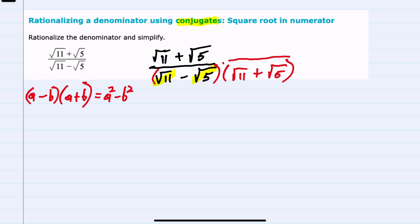And to do this multiplication, I would also need to multiply the numerator by that same square root of 11 plus the square root of 5. So in effect, we're multiplying by 1, since these numerators and denominators are the same. And since I have conjugates in the denominator, I can use this form to say that I will end up with the first term squared, so this would be the square root of 11 squared, minus the second term squared, so the square root of 5 squared.